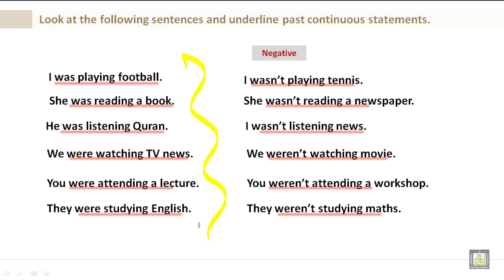On the left side you have positive, and on the right side you have negative. Please keep in mind that whatever is underlined is a past continuous statement. Negative: I wasn't playing tennis. She wasn't reading a newspaper. I wasn't listening to the news. We weren't watching a movie. You weren't attending a workshop. And they weren't studying math.